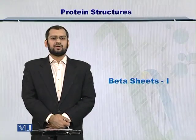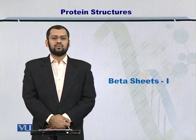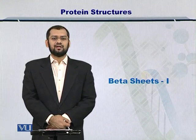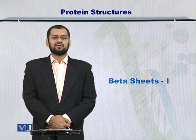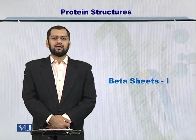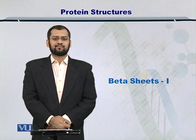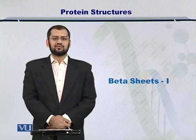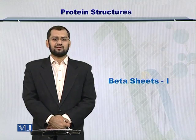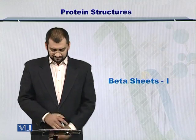Dear students, now that we know what alpha helices are, let us study another type of secondary structure. This is called the beta sheets. There will be two modules on beta sheets and this is the first one in the series.